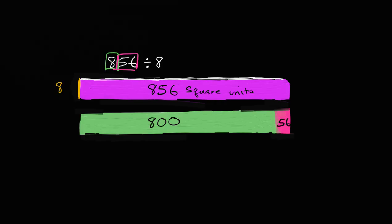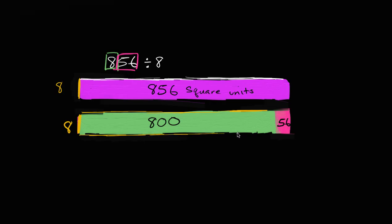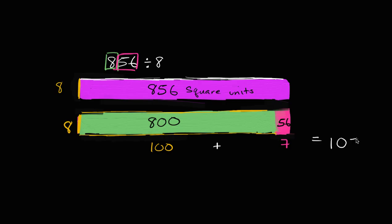Same area — I just broke it up. And now if you say this dimension is eight, what is this length up here going to be? It's going to be 800 divided by eight, so this length right over here is going to be 100. Eight hundreds divided by eight is 100. And then you have this other magenta part. What is 56 divided by eight? Well, that's seven. So this length right over here is going to be seven. What's this entire length? It's going to be 100 plus seven, which is equal to 107.